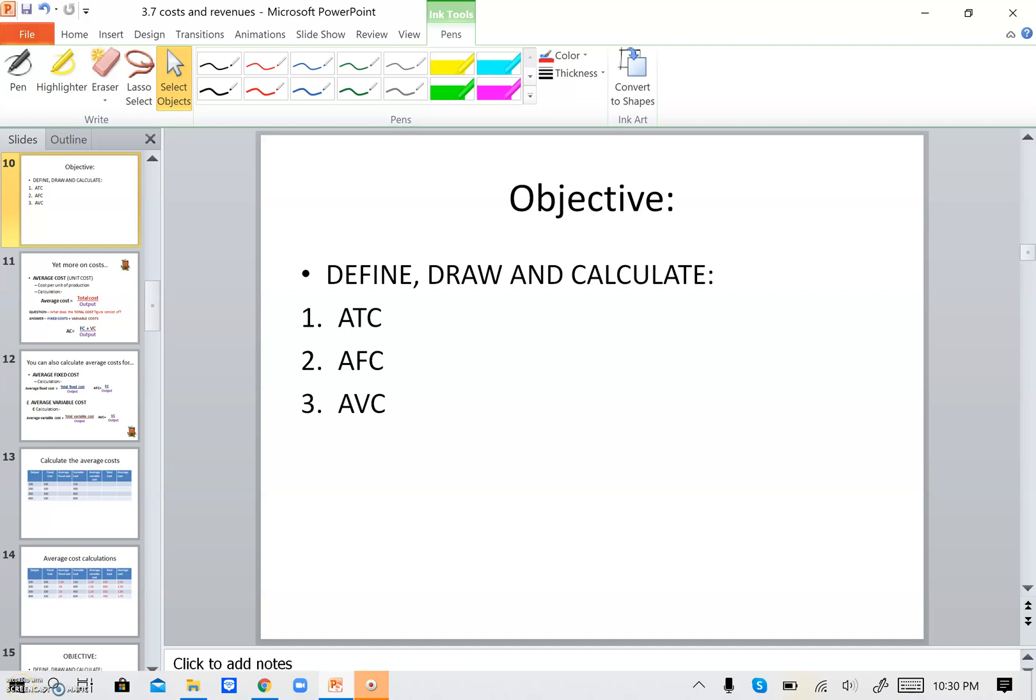Hello everybody, this is the second recording for unit 3.7 and in this recording we will be talking about average total cost, average fixed cost, and average variable cost. You will learn by the end of the chapter its definition, how to draw it graphically and how to calculate it.